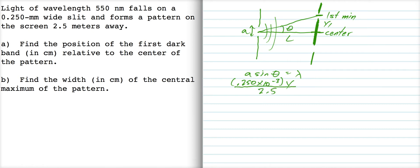Let me show you what I mean here: A times y over L equals lambda. So I got 0.250 times 10 to the minus 3 times y over 2.5 is equal to 550 nm.